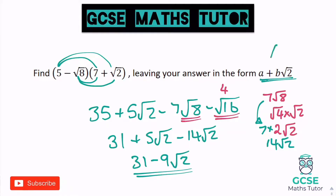So our answer is 31 minus 9 root 2. That's a little bit unusual because the question had a plus in the form a + b√2 — but it just means the value of b is negative 9, which would be 31 plus negative 9 root 2. We obviously wouldn't write it like that — we'd just write the minus, giving 31 minus 9 root 2. Next time we're going to have a look at rationalising the denominator. If you liked the video, please like, comment, and subscribe — drop a comment if you'd like particular videos done. See you for the next one.